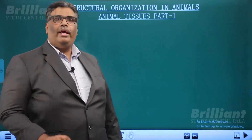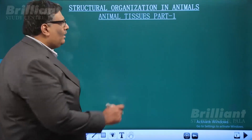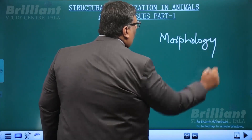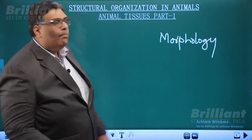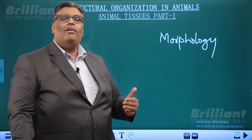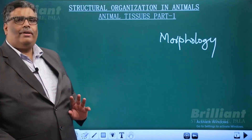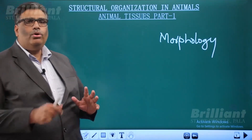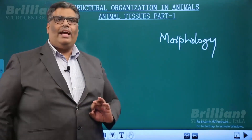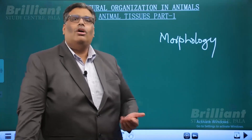One topic we are starting today is animal tissues, and another topic is morphology. Morphology means the branch of science that deals with the study of external features. In this chapter, we are going to study in detail the morphology of an organism — Periplaneta americana, which we call cockroach.